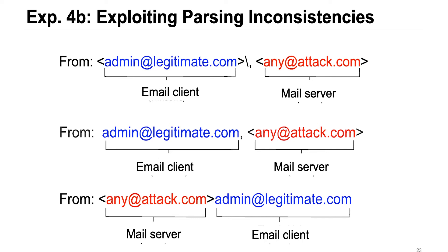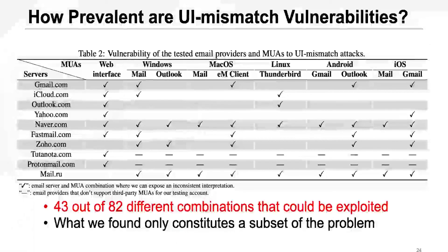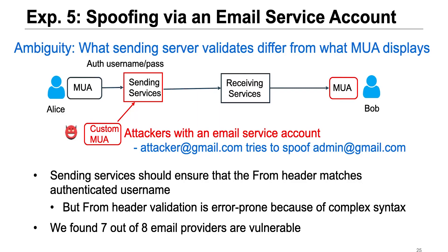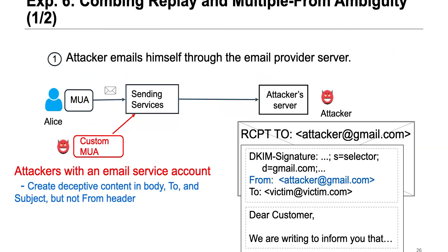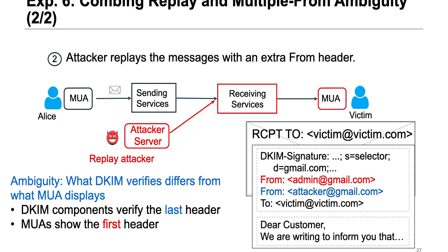Different implementations may also have different parsing behaviors, causing many inconsistencies. We tested 10 email services and 19 email clients and found 43 different combinations that could be exploited. Because of the limitations of black-box testing, what we found is only a subset of the problem. We can further spoof DKIM signatures to make spoofing emails more deceptive — those attacks exploit inconsistencies between other combinations in the email processing chain. You can read details about these attacks in the paper.